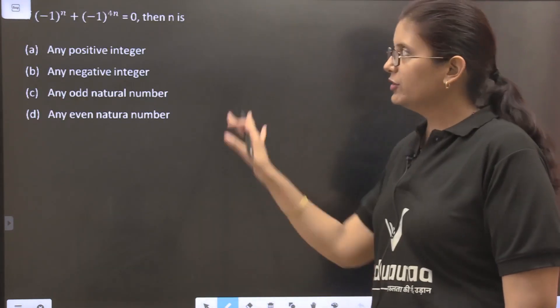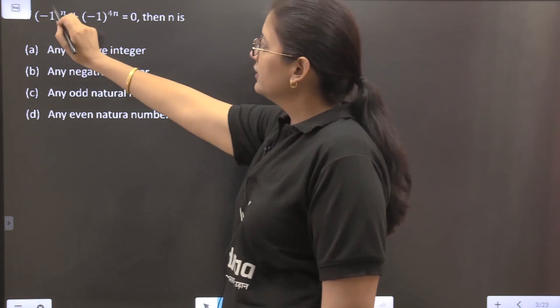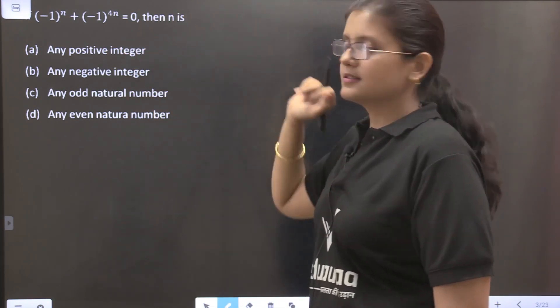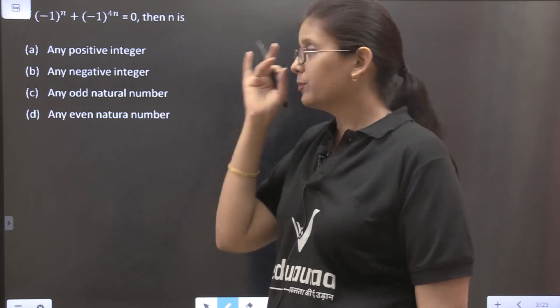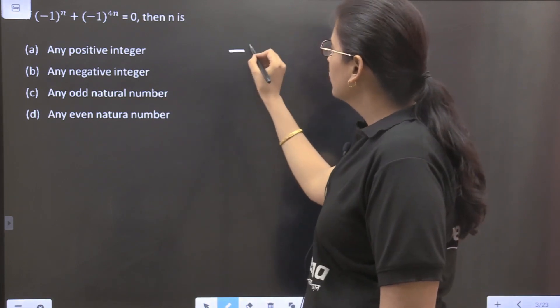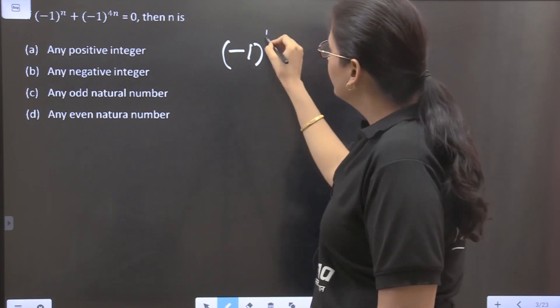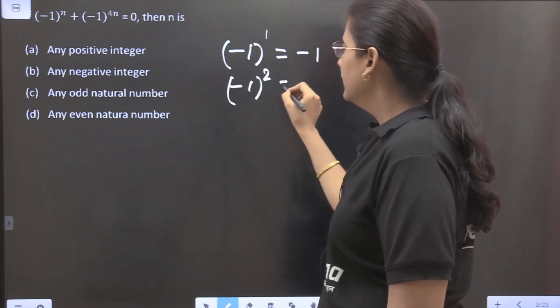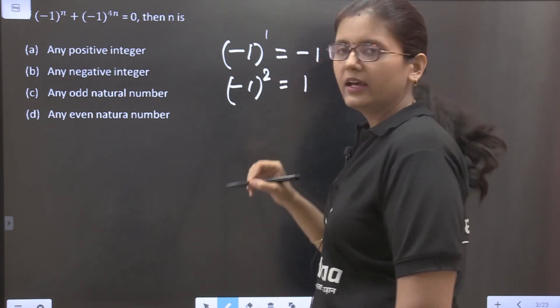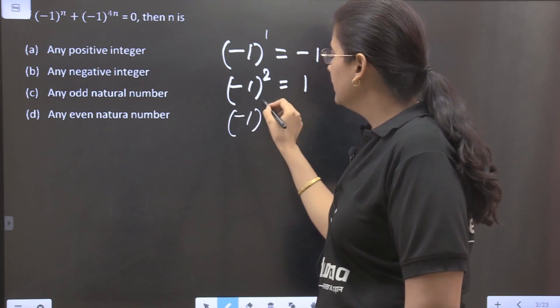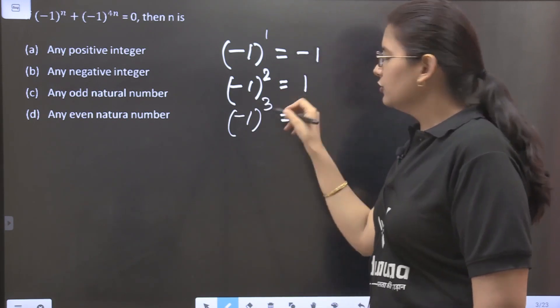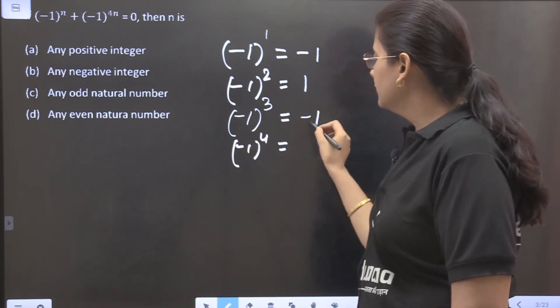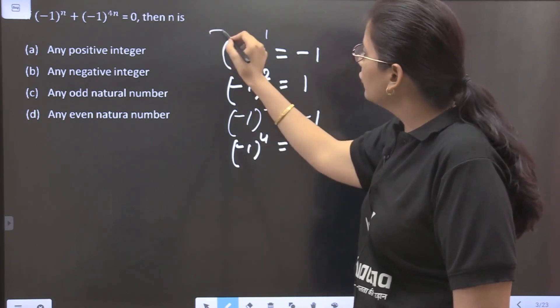Now coming to the first question. Here we have (-1)^n + (-1)^4n = 0, then n is what is the nature of n? So first of all we should know that minus 1 if it has power 1 then this equals minus 1. If it is power 2 then it is minus 1 into minus 1 is 1. Then again minus 1 to the power 3 is 1 into minus 1, again it's minus 1. Again minus 1 to the power 4 is 1.